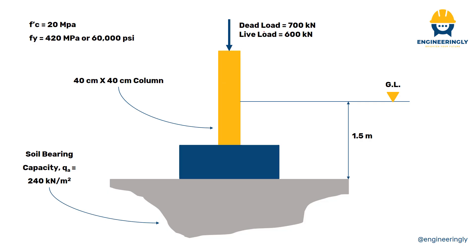The loads are transferred from slabs to beams, then from beams to the column, and from the column to the footing. The footing spreads the load to the earth beneath it. In our example, we have a dead load of 700 kilonewtons and a live load of 600 kilonewtons. The compressive strength of concrete is 20 megapascals, and the yield strength of steel is 420 megapascals — grade 60 steel. The column is 40 by 40 centimeters, the lower face of the footing is 1.5 meters below ground level, and the soil bearing capacity is 240 kilonewtons per meter squared.